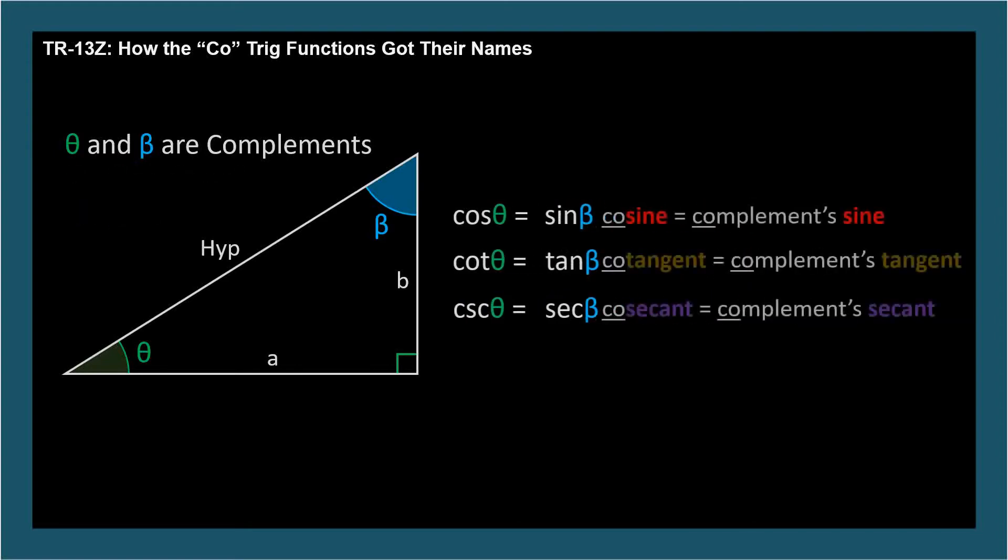The co in these trig function names refers to the complement. The cosine is the complement's sine. The cotangent is the complement's tangent. And the cosecant is the complement's secant.